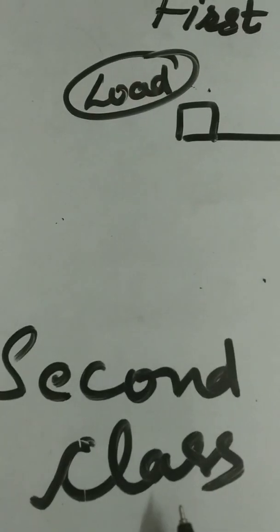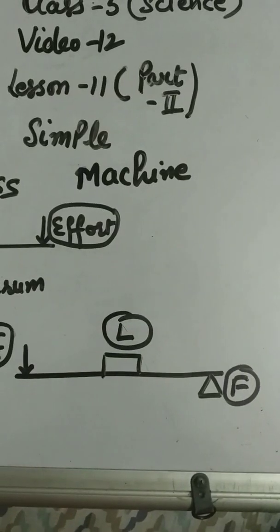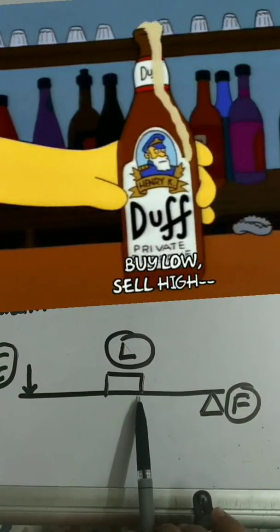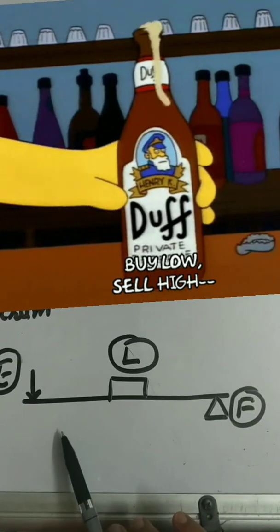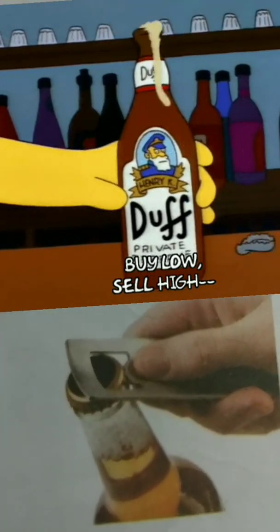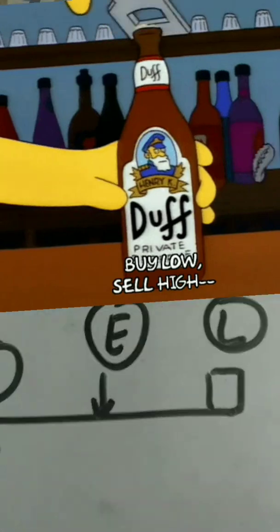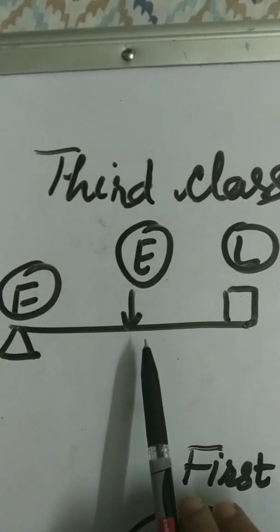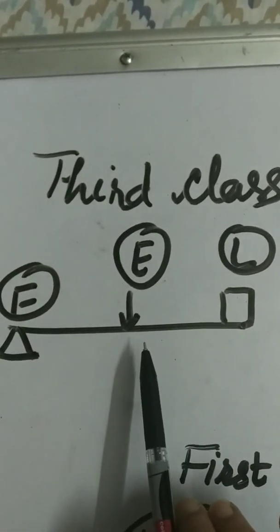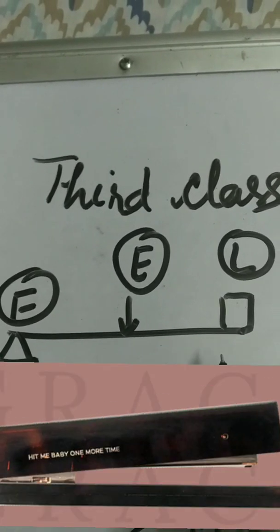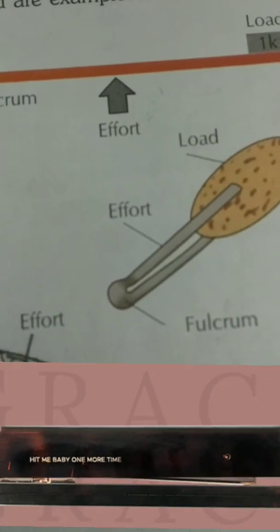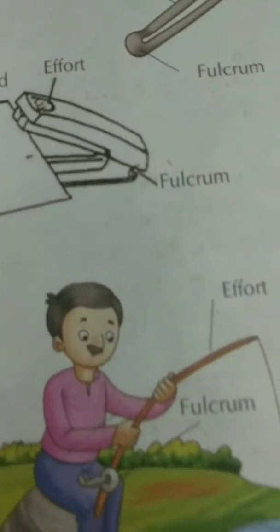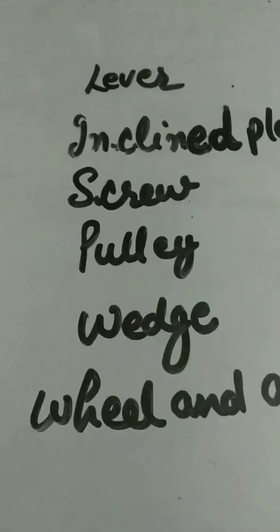Second class lever is one in which the load is located between the fulcrum and effort. An example is a bottle opener. Third class lever is one in which the effort is located between the fulcrum and load. Examples include a pair of tongs, a stapler, and a fishing rod.